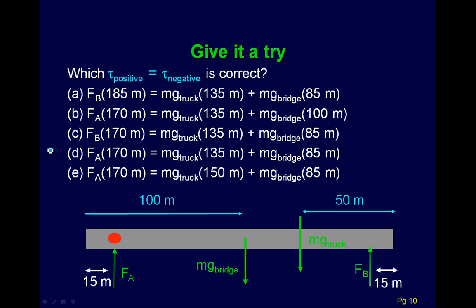So next is move to what's probably the trickiest part about this, which is doing this torque stuff. Now I'm going to make the axis over here, this red dot that I'm coloring in blue, where F of A is acting. And so you tell me what is the correct torque positive equals torque negative equation.